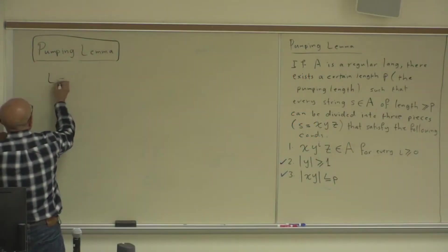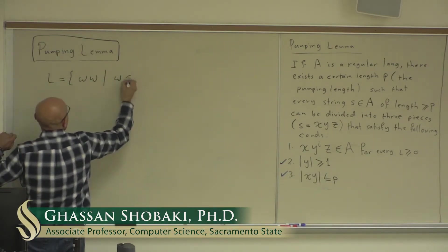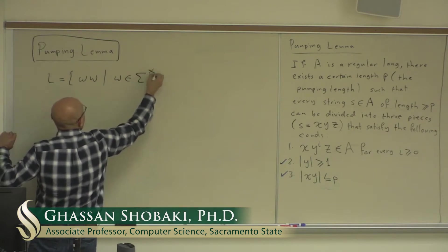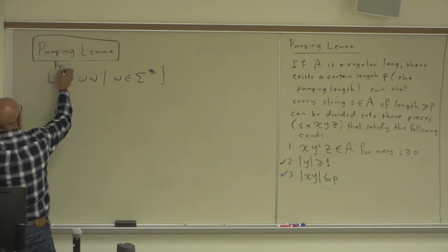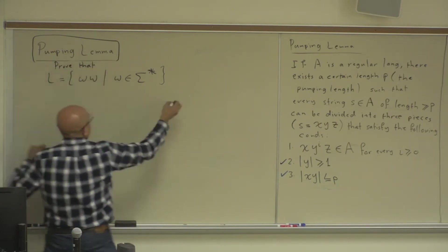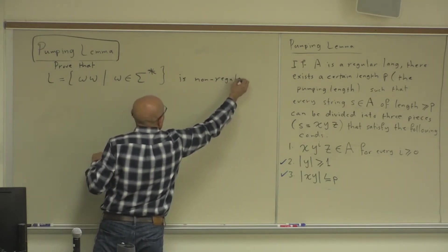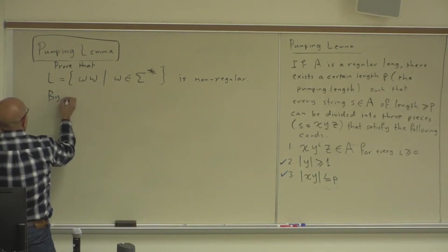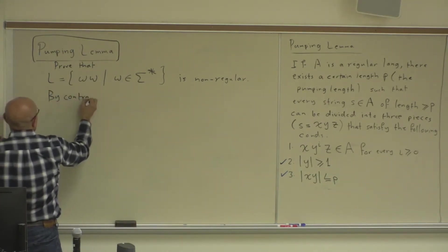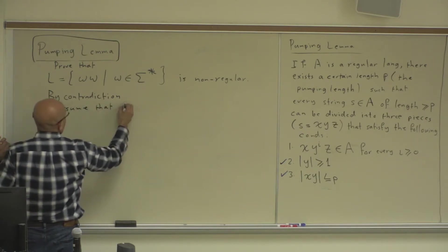L is the language {ww | w ∈ Σ*}. Prove that this language is non-regular. We prove it by contradiction, so we assume that L is regular.